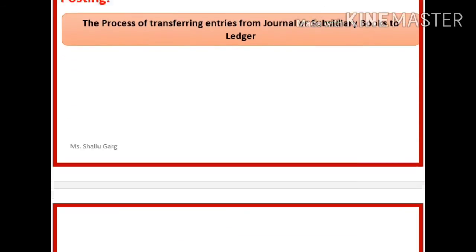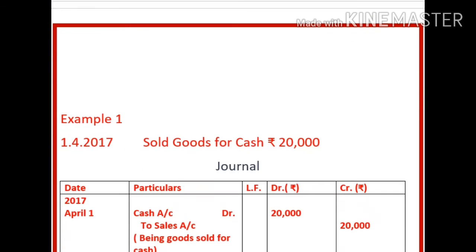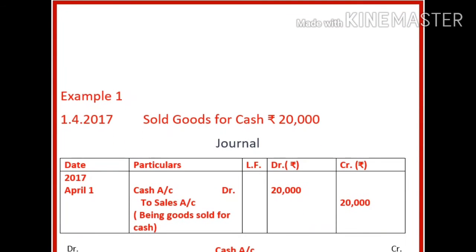Now let us take an example. Suppose you have sold goods for cash, rupees 20,000. Then you will enter in the journal: cash account debit to sales account, 20,000. Now how many heads are there? Two heads — one is your cash account and second one is your sales account. So you will open two heads in the Ledger: one is cash and one will be your sales.